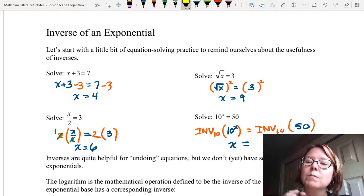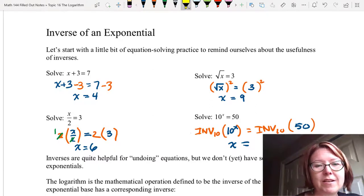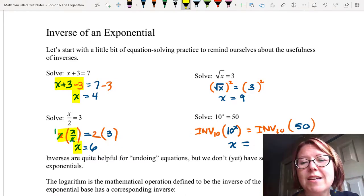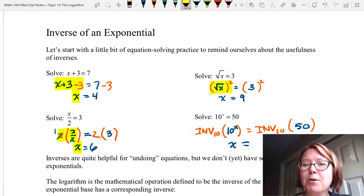Just to recap, when we compose a function with its inverse, the result is always going to be whatever the input is. So when we did x plus 3 minus 3, we composed a function with its inverse, and the result was x. When we did 2 times x over 2, we composed a function with its inverse, and the result was x. And when we did square root of x to the second power, we composed a function with its inverse, and the result was x.